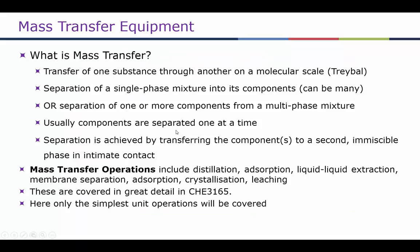Mass transfer operations allow us to separate substances from each other. The separation can be of a single-phase mixture into different components, or separation of more than one component from a multi-phase mixture. Usually components are separated one at a time. For example, in a multi-phase multi-component system, it's easier to first separate the two phases — such as gas and liquid — and then separate the individual components in each phase depending upon their boiling points.